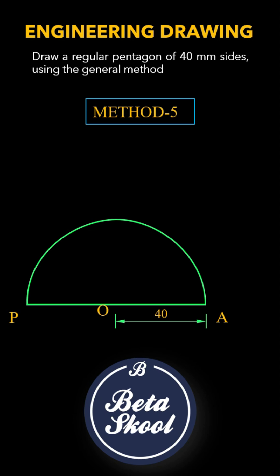Next, divide the arc into 5 equal parts since we're drawing a pentagon. Each section subtends an angle of 36 degrees at the center O. Starting from point P, mark these divisions as 1, 2, 3, and 4.